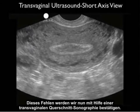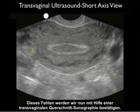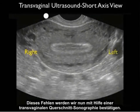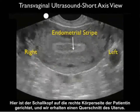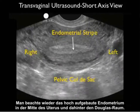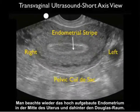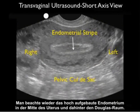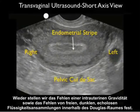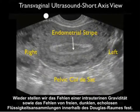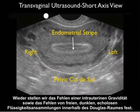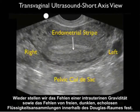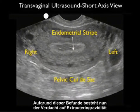Now we'll confirm the absence of an IUP by scanning in the transvaginal short axis plane. The probe marker is oriented towards the patient's right and we're cutting the uterus in cross section. Notice again the thickened endometrial stripe in the midline and the pelvic cul-de-sac posteriorly. We again see the absence of an IUP and also note the absence of free fluid — dark anechoic fluid collections within the pelvic cul-de-sac. Given these findings, we're now concerned about the presence of an ectopic pregnancy.